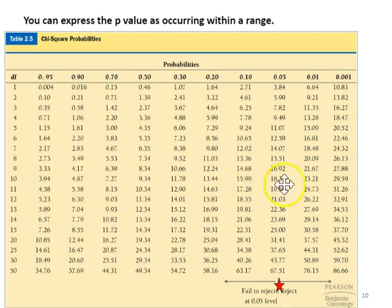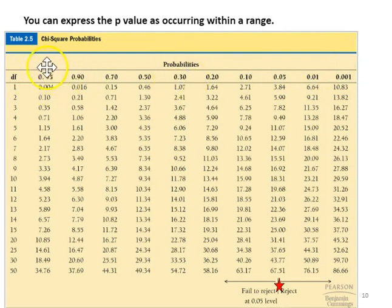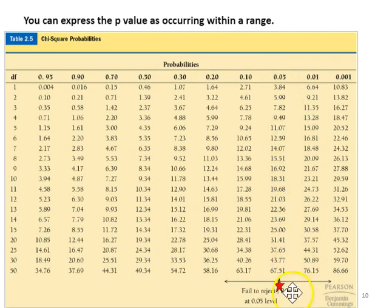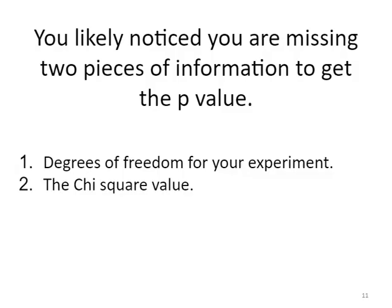P-values can be calculated using software or programs, but it's also really common to look them up using a table. P-values are given across the top — so 0.001 is a p-value, 0.3 is a p-value, 0.95 is a p-value — that would be 95%, 50%, 30%, and so on. Over here is our 0.05, and the star shows us that this is the threshold p-value. You need a couple of other pieces of information to find the p-value range you're working with experimentally.